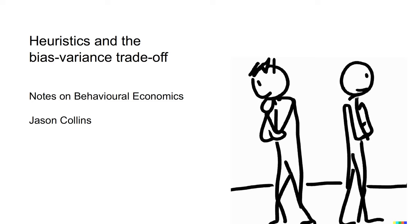Hi, I'm Jason. This video is about heuristics and the bias-variance trade-off. Much of the heuristics and biases literature of Kahneman and Tversky, and those who followed in their footsteps, focuses on the errors that can be caused by the use of heuristics. However, there are also powerful reasons for why we use heuristics in decision making. One of the strongest arguments relates to what is called the bias-variance trade-off.